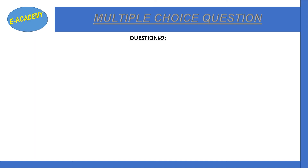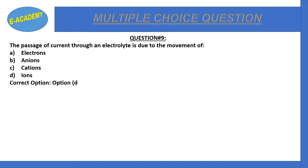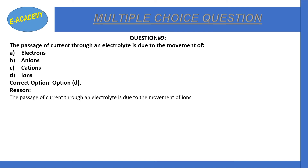Question number 9: The passage of current through an electrolyte is due to the movement of electrons, anions, cations, or ions? The correct option is D: the passage of current through an electrolyte is due to the movement of ions.